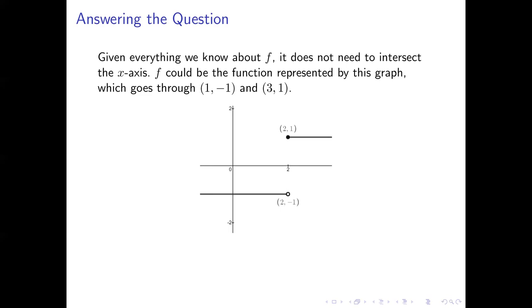This graph goes through the points (1, -1) and (3, 1), the points we had labeled on our previous picture, but notice that the graph never goes through the x-axis. We have a jump discontinuity where x equals 2, and because the graph jumps over the x-axis there, it never actually has to hit the x-axis on the way.